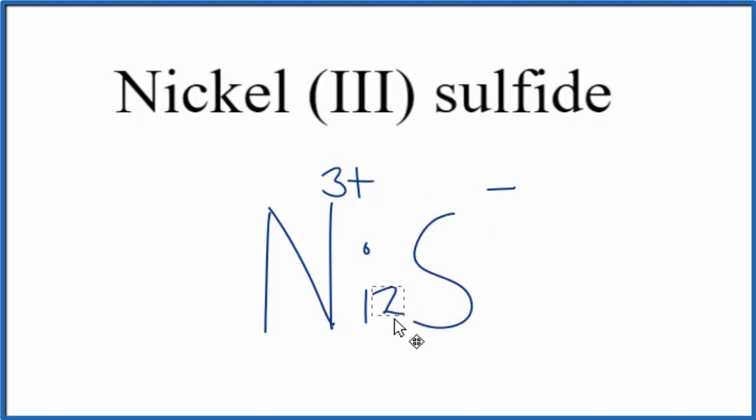We could take the 2, move it down here, and the 3 over here. This is called the crisscross method. Now we have the formula for nickel (III) sulfide, Ni₂S₃.